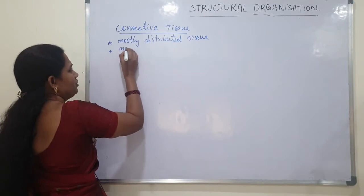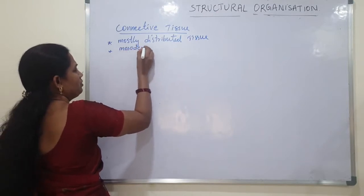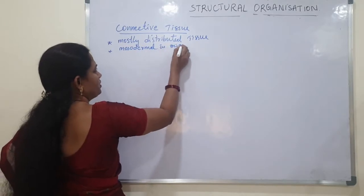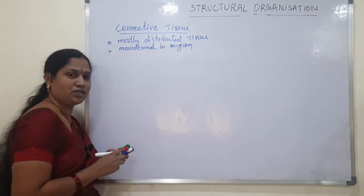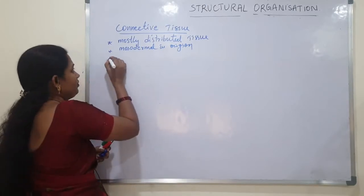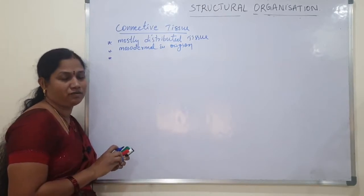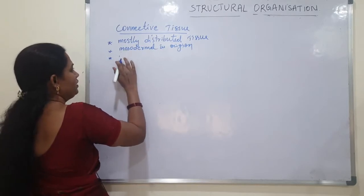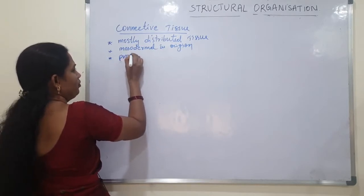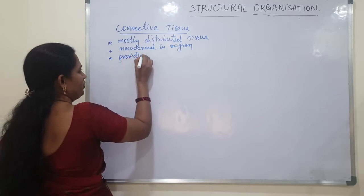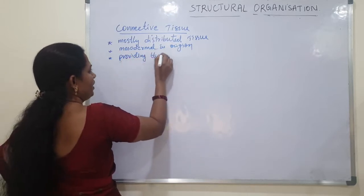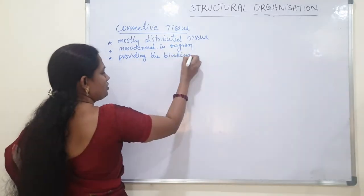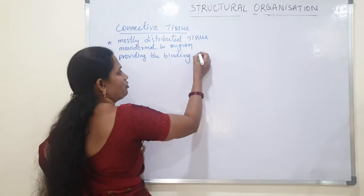Connective tissue is mesodermal in origin — it originates from the mesoderm. The main function of connective tissue is that it provides binding — binding of tissues with other tissues — and also gives support.